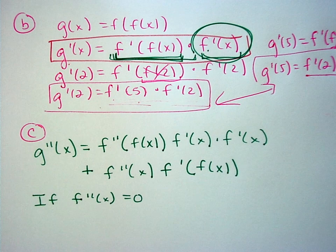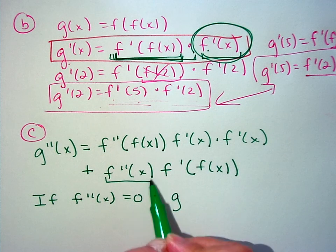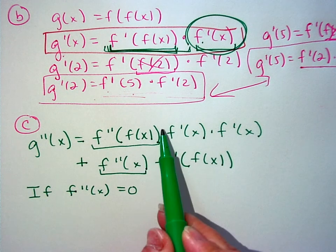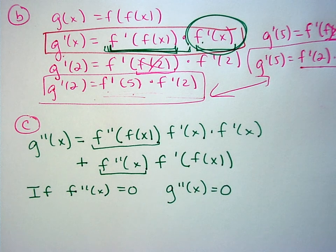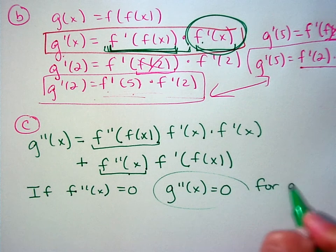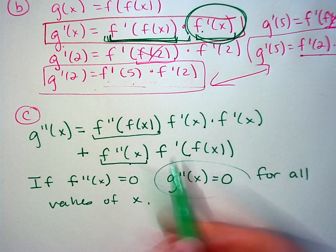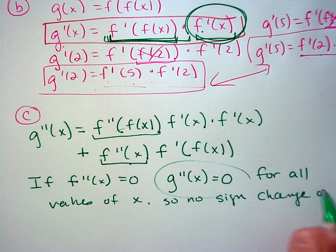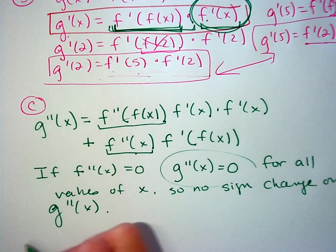If the second derivative equals 0, then each grouping becomes 0, and so the whole expression is 0. Because g″(x) is always 0 for all values of x, there is no sign change on g″(x), and therefore there is no point of inflection.